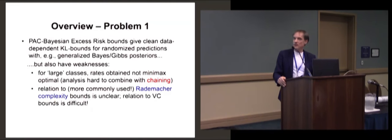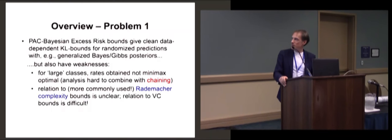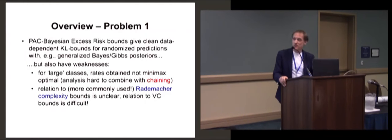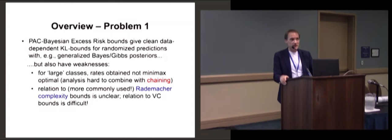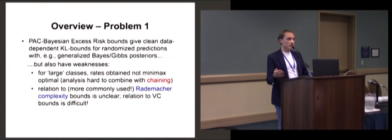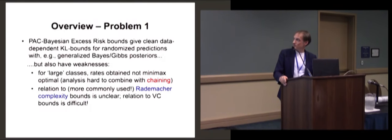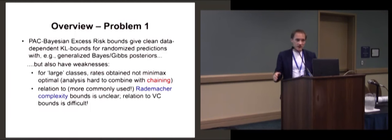But these bounds also have weaknesses. If you have really large classes — what people in statistical learning theory often study, like polynomial bracketing entropy classes — these bounds don't give you the right rates. So the algorithms you get are somehow not minimax optimal, or if you do get the right algorithms, you cannot really analyze them with these bounds. Nowadays the Rademacher complexity approach is a lot more common and has become the standard approach in textbooks on learning theory. Rademacher complexity bounds are then usually also transferred to VC dimension bounds, and it's very unclear how they relate to PAC-Bayes bounds.